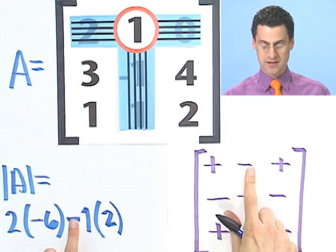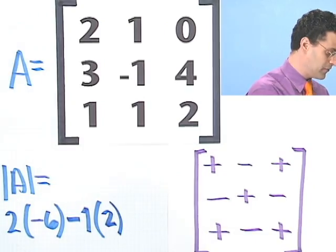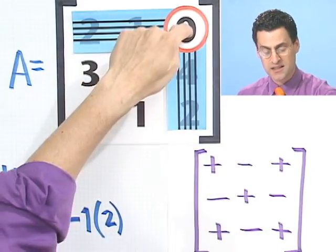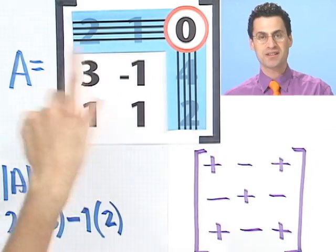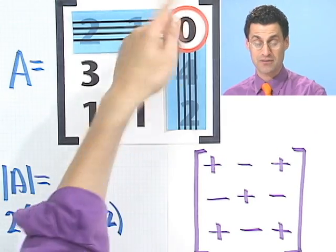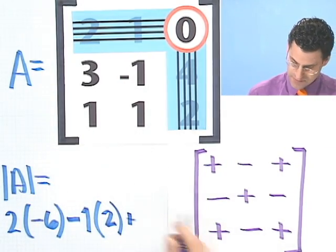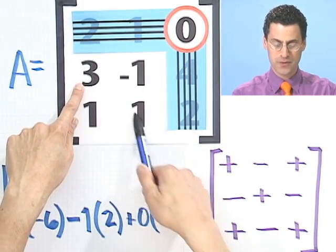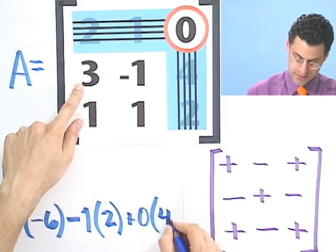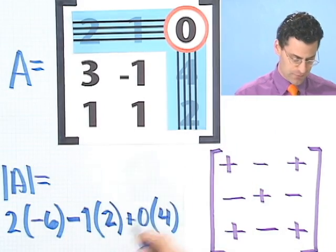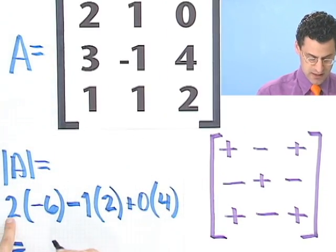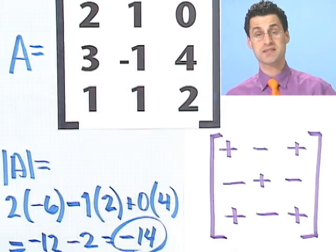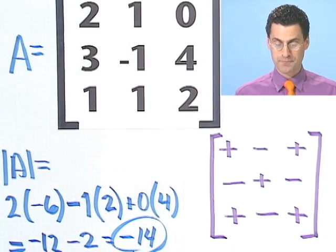So I subtract 1 times 2, giving minus 2. Finally, I expand around the 0 element. I get rid of its row and column and take 0 times the determinant of what remains — but since I'm multiplying by 0, that term is 0 regardless. So I add plus 0. Therefore the determinant of the whole matrix equals negative 12 minus 2, which equals negative 14. The determinant of this matrix is negative 14, found by expanding along the first row.